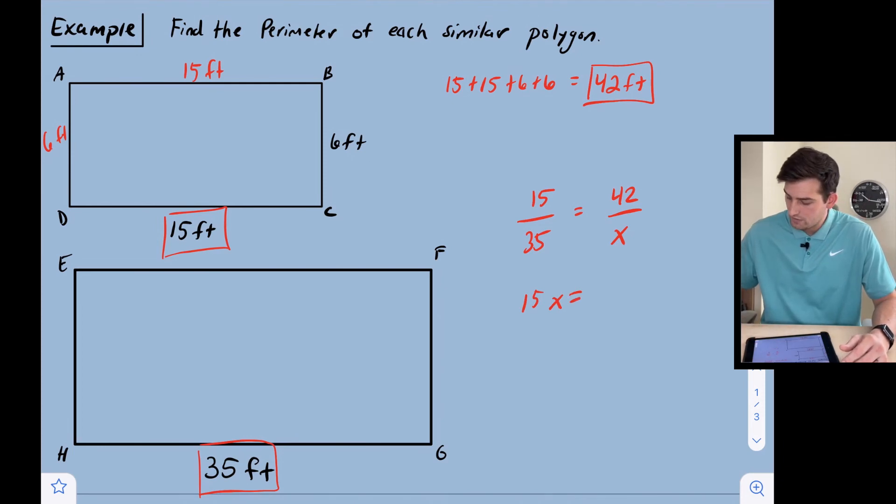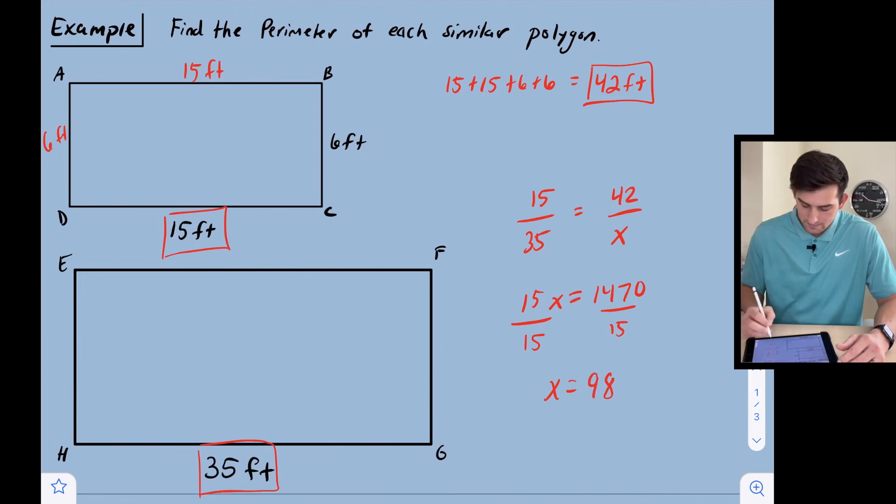We can cross multiply: 15x equals 42 times 35, which gives us 1470. Then divide by 15, so x equals 98.